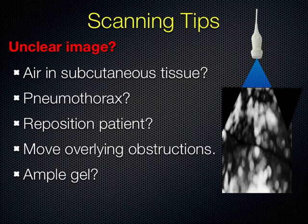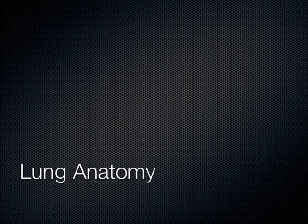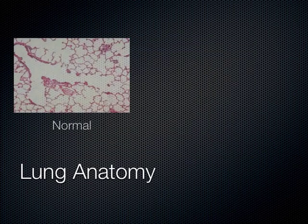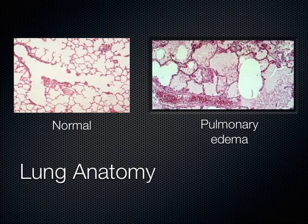Let me quickly review lung anatomy. We're really interested in what's at the periphery of the lung. The terminal bronchioles branch into the alveoli, which are divided off from each other by interlobular septae. Histologically, a normal lung shows the terminal bronchiole and all the little alveolar sacs off the end. In pulmonary edema, the air is replaced by fluid, and the interstitium is quite a bit thicker — that's going to be important to note.